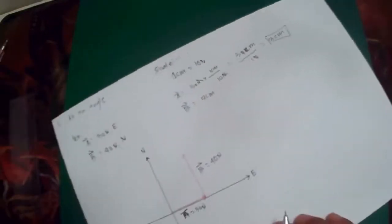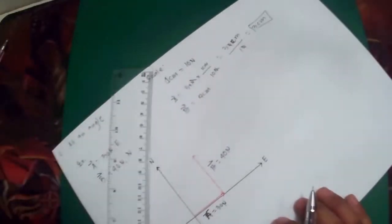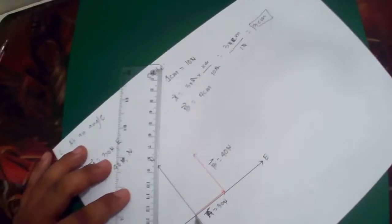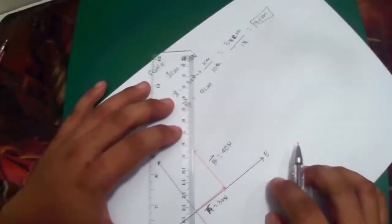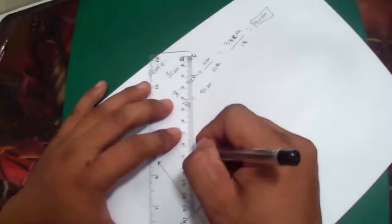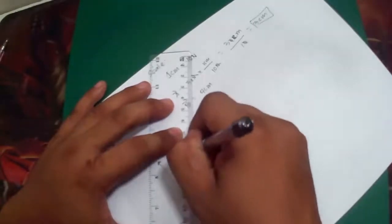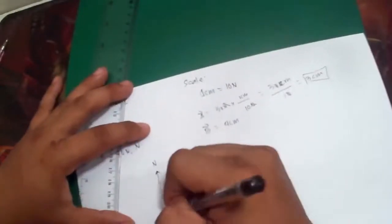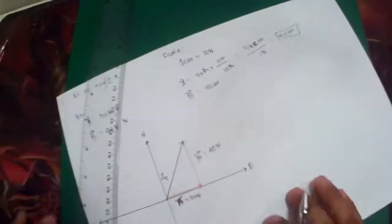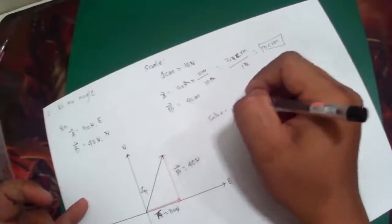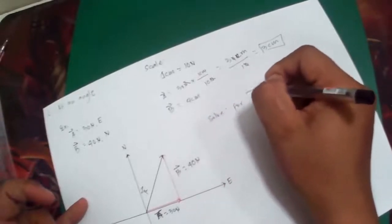And obviously, the resultant vector, according to the definition, can be drawn from the tail of the first vector to the tip of the last vector, or head of the last vector. So this is now the resultant vector. Okay, now solve for resultant vector.